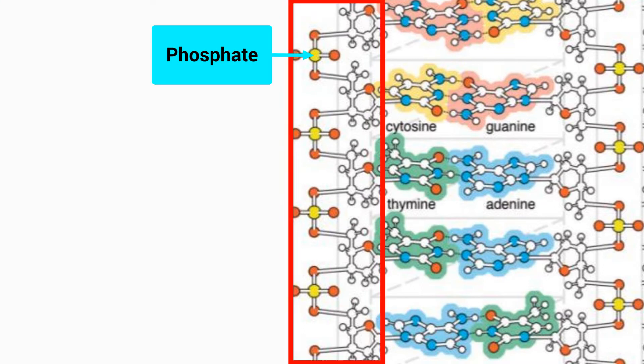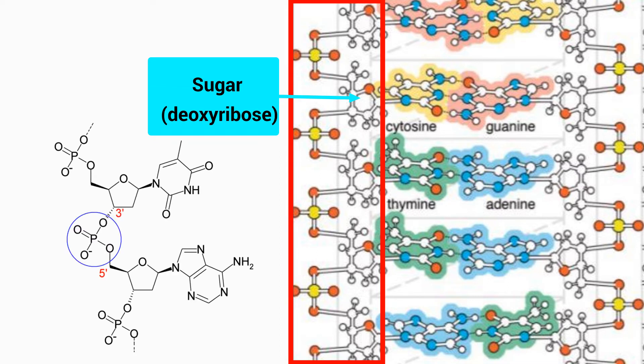The model shows the alternating sugar phosphate backbone of DNA. The phosphate groups and sugars are joined by phosphodiester bonds.